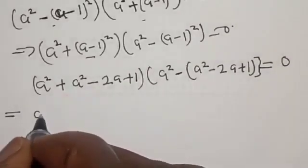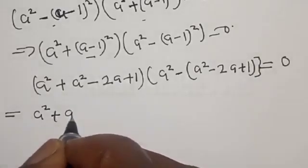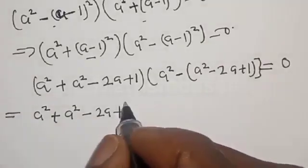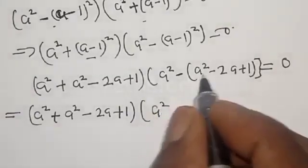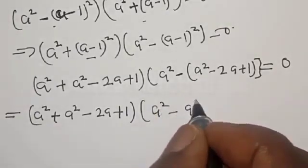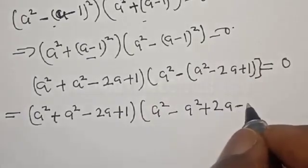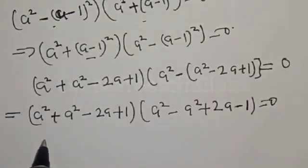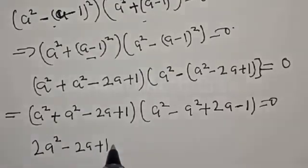Our equation becomes A squared plus A squared minus 2A plus 1 for the first factor, and A squared minus A squared plus 2A minus 1 for the second factor, equal to 0. Combining: A squared plus A squared gives 2A squared minus 2A plus 1.